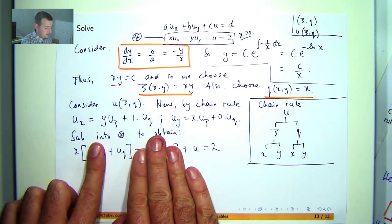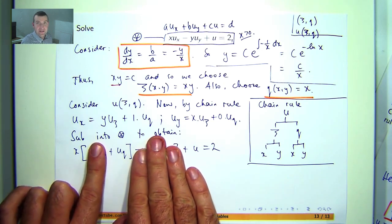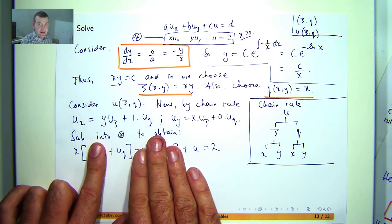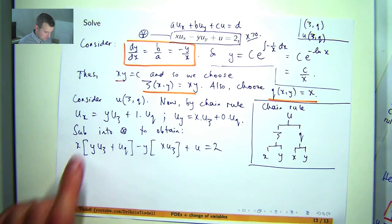So essentially that's going to disappear and that's going to disappear. So what I'm left with then is a differential equation, a partial differential equation, that only has one derivative present. So it's been simplified in a significant way, which means we can solve it.